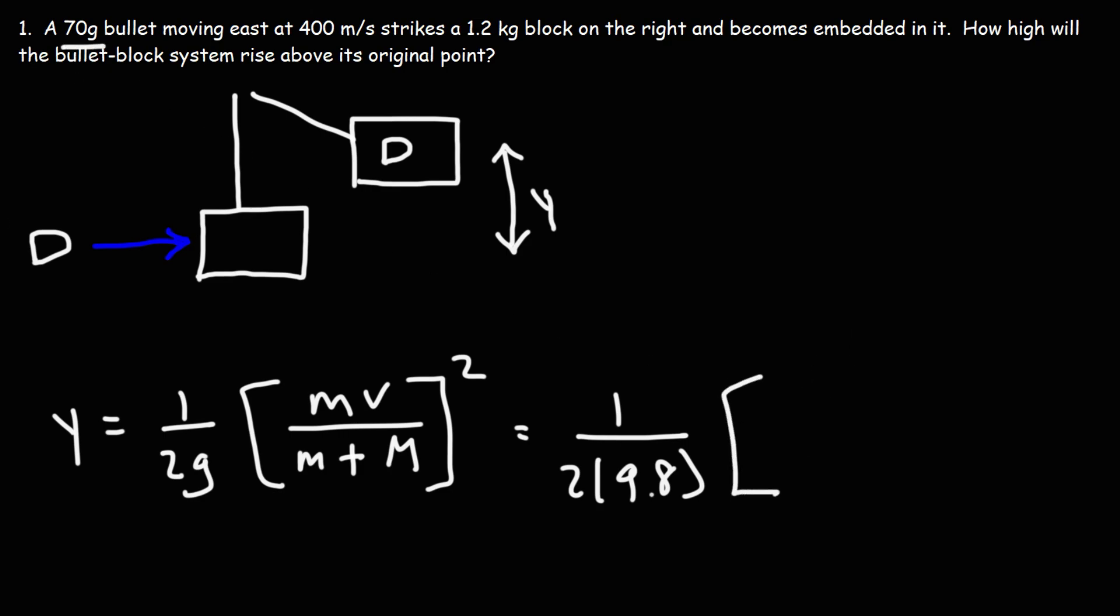The mass of the bullet is 70 grams. We need to convert that to kilograms. To convert grams to kilograms, divide by a thousand. So 70 divided by a thousand is 0.07 kilograms, and the speed of the bullet is 400 meters per second. Then we need to divide it by the total mass, the mass of the bullet and the mass of the block, which is 1.2 kilograms. Then we need to square the result.